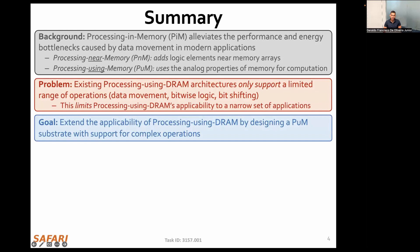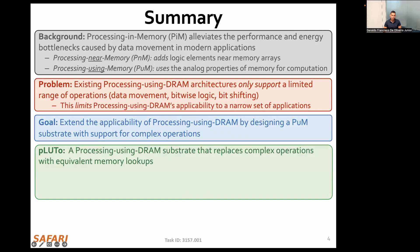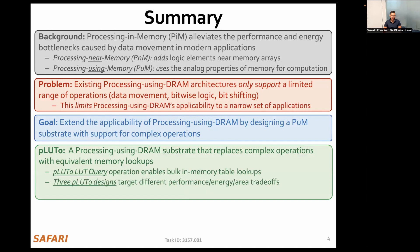Based on these observations, our goal in this work is to extend the applicability of processing-using-DRAM architectures by designing a processing-using-DRAM substrate that supports complex operations. To this end, we describe Pluto, a processing-using-DRAM substrate that replaces complex operations with equivalent memory lookups. The Pluto lookup query operation is the core of Pluto — the operation that enables bulk in-DRAM table lookups. We provide three different Pluto designs, each targeting different performance, energy, and area trade-offs. We also provide the end-to-end system integration.